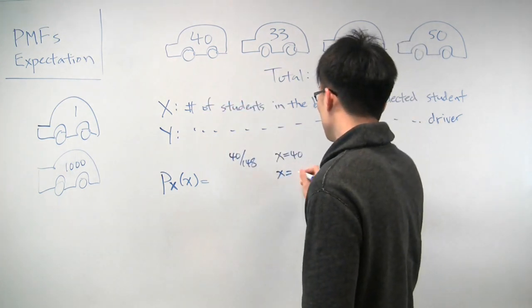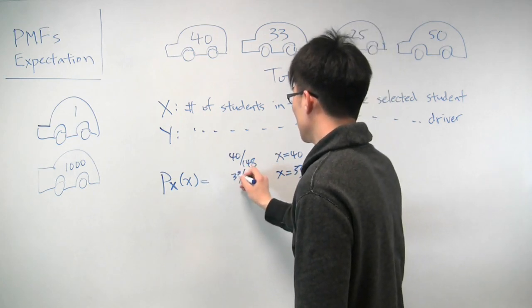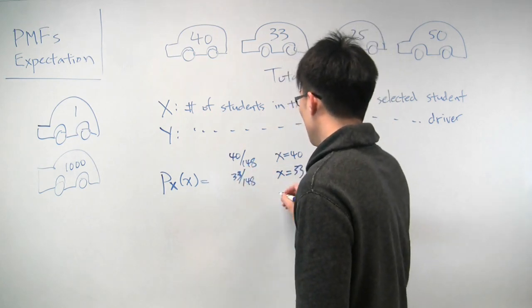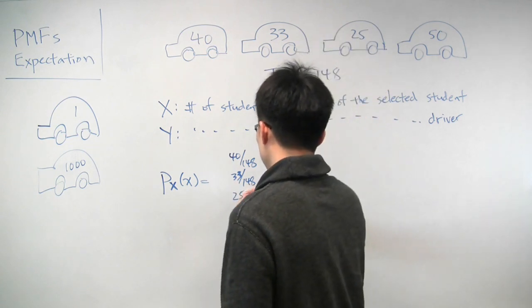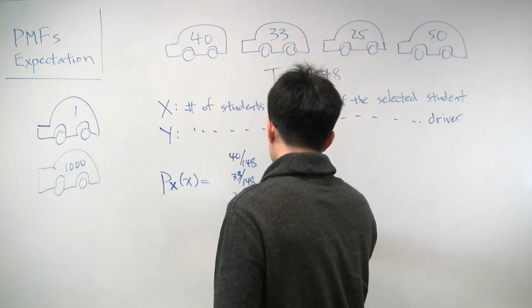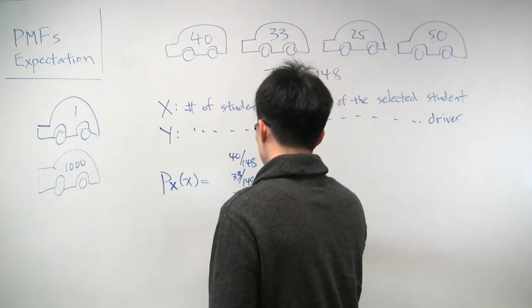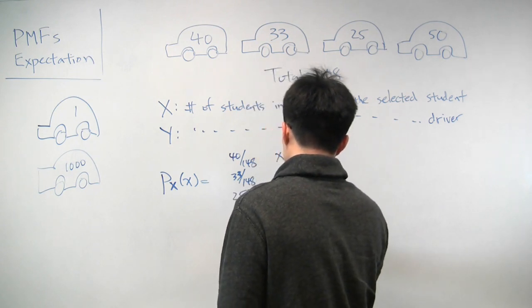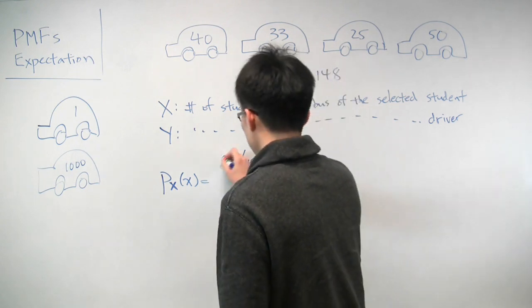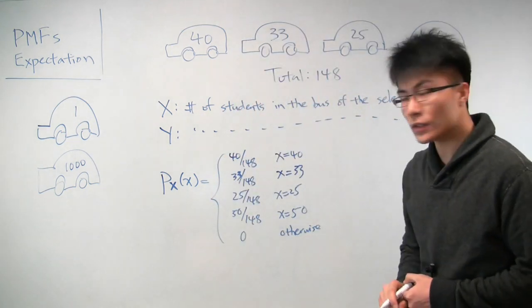And similarly, x will be 33 with probability 33 over 148. And x will be 25 with probability 25 over 148. And x will be 50 with probability 50 over 148. And it will be 0 otherwise. So there is our PMF for x.